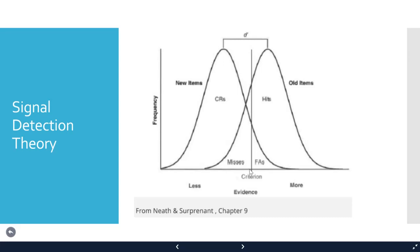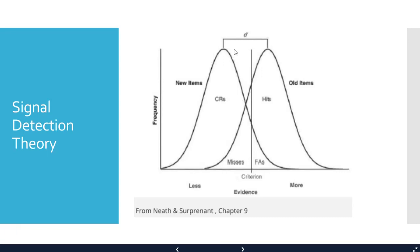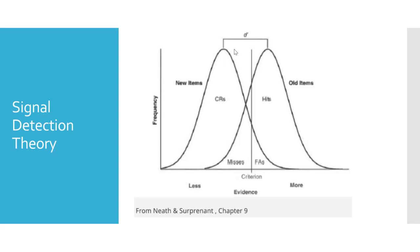The criterion is the line at which, when your test item falls to the right of it, you call it old. Anything to the right of the criterion is called old; anything to the left is called new. This is your decision rule: when memory strength exceeds the criterion, you respond old; when it falls below, there's not enough strength to say old, so you respond new.